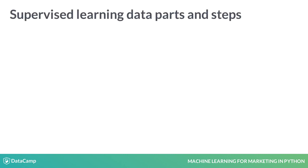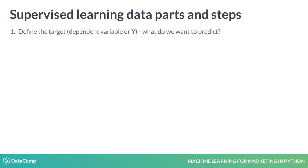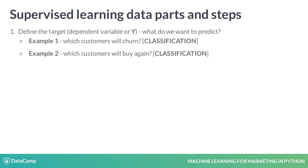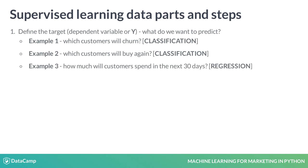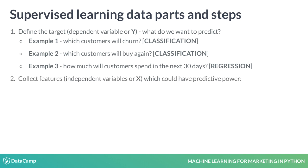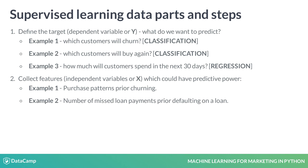Supervised learning requires two key data elements. The first one is the target variable, which is what we want to predict. It could be predicting which customers will churn or which customers will buy again. Another example is predicting how much the customers will spend in the next 30 days. The second data element are the features that will be used to predict the target variable. It could be purchase patterns and behaviors collected prior to customers churning, or a number of missed loan payments prior to defaulting on a loan.